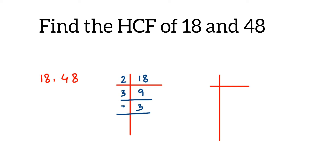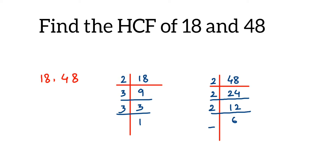Then three 1s are 3. Now we're going to do it for 48. It goes in the 2 times table because it's an even number. We keep dividing by 2 — two 2s are 4, two 4s are 8, two 6s are 12 — remember you have to take only prime numbers. Two 3s are 6, and then three 1s are 3. You have to do it until you get 1.